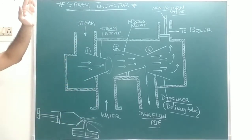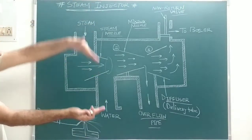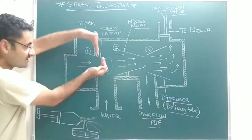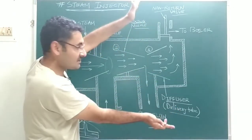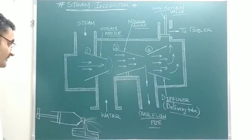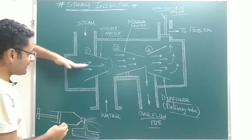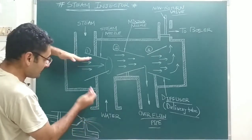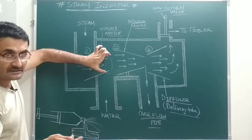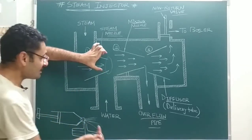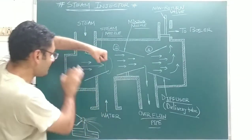Conversely, a diverging nozzle — a diffuser — increases the pressure. So to summarize: the converging steam nozzle increases velocity and decreases pressure, creating a suction effect that draws water upward. The diffuser increases the pressure. Steam from the first inlet enters the steam nozzle, velocity increases, pressure drops at the outlet, suction draws water upward.